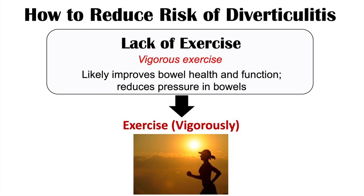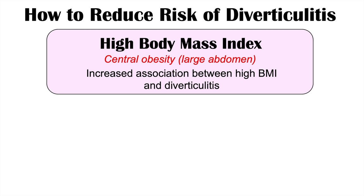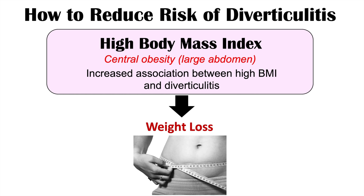Also tied in with exercise is high body mass index. High BMI is a risk factor for getting diverticulitis, and more specifically it is central obesity — having a large abdomen — that seems most important. A larger abdomen may affect the functioning of the bowels. To reduce your risk of diverticulitis, weight loss is the goal, which also helps with insulin sensitivity and liver health.